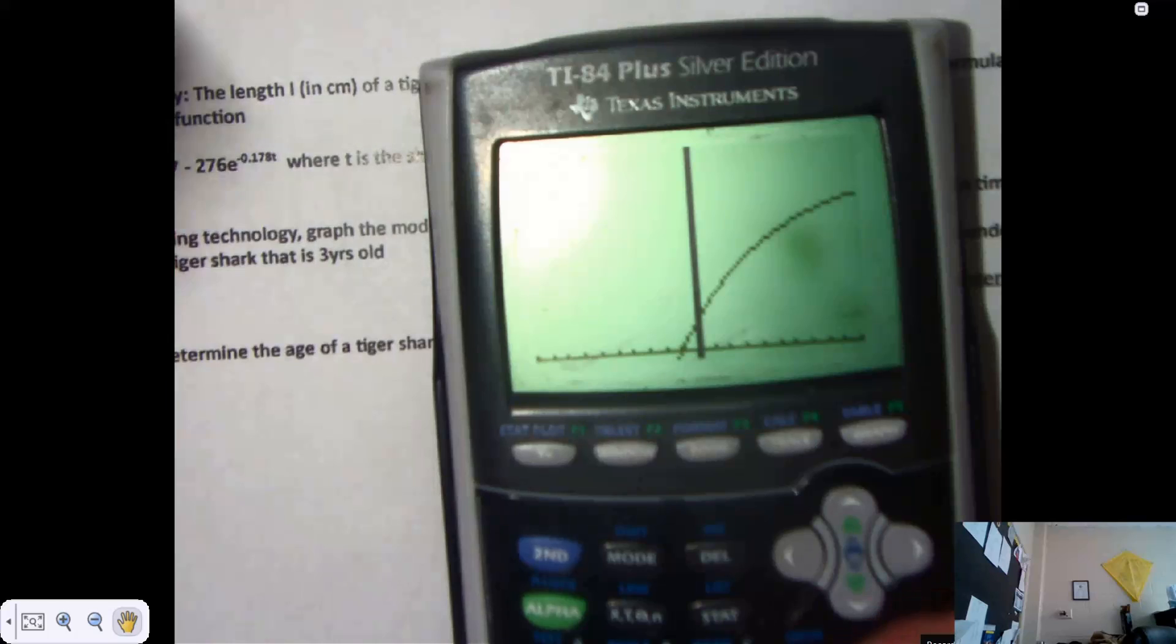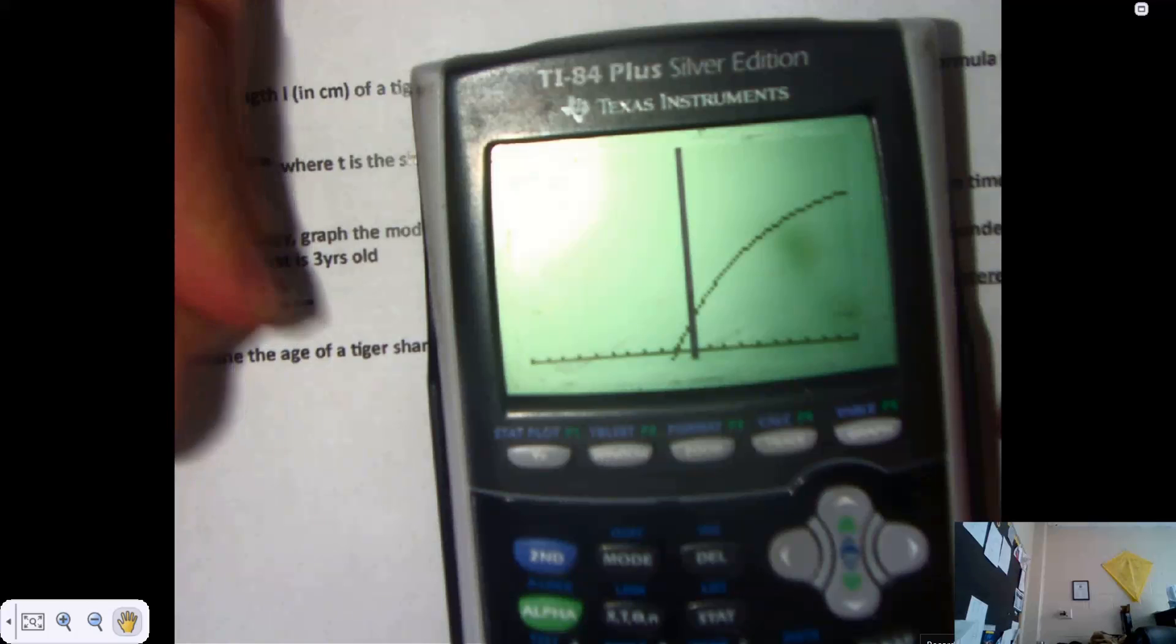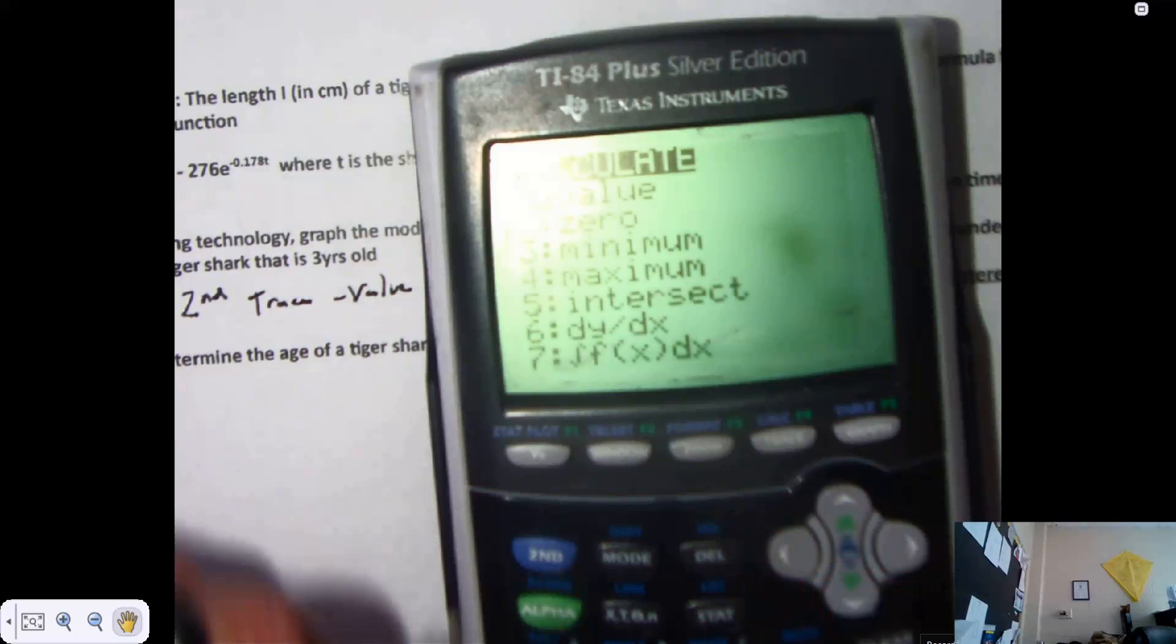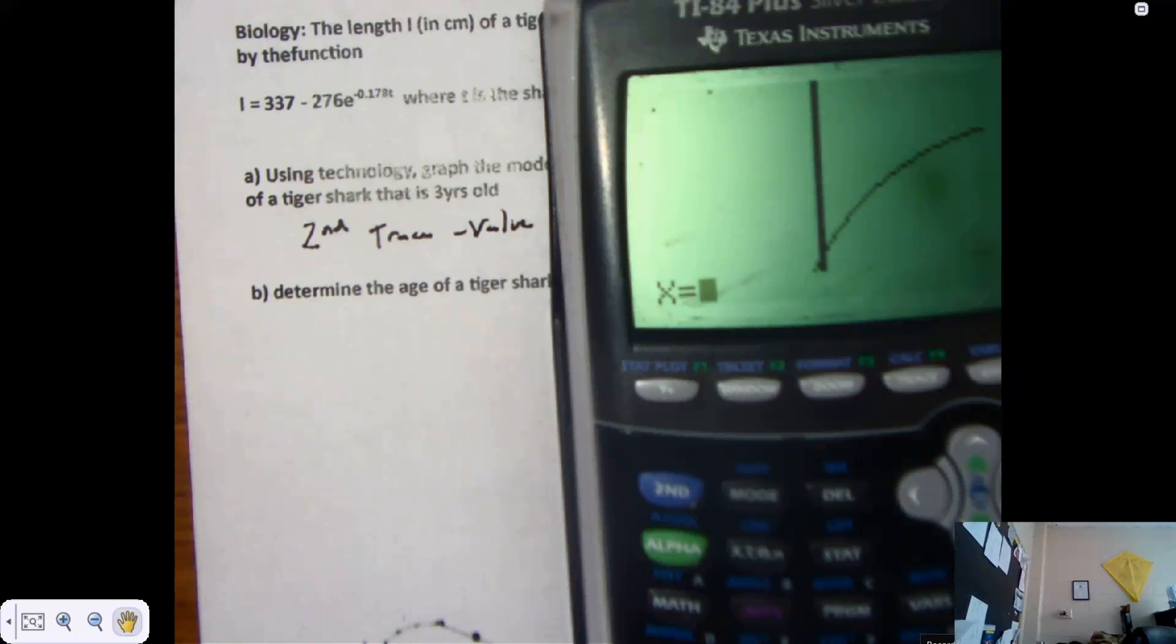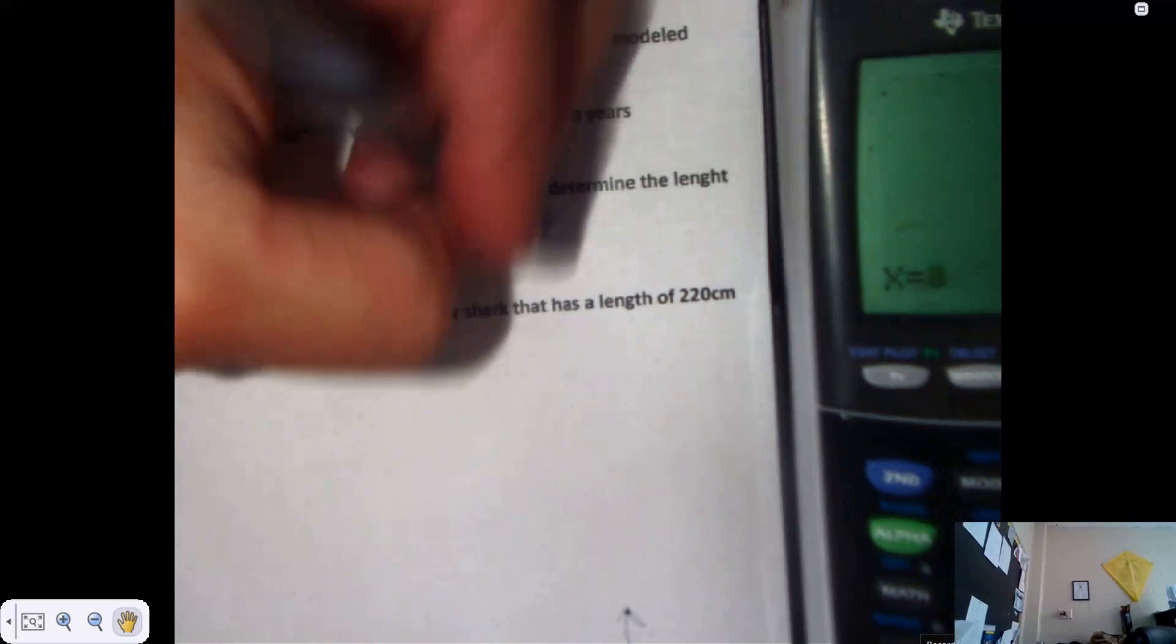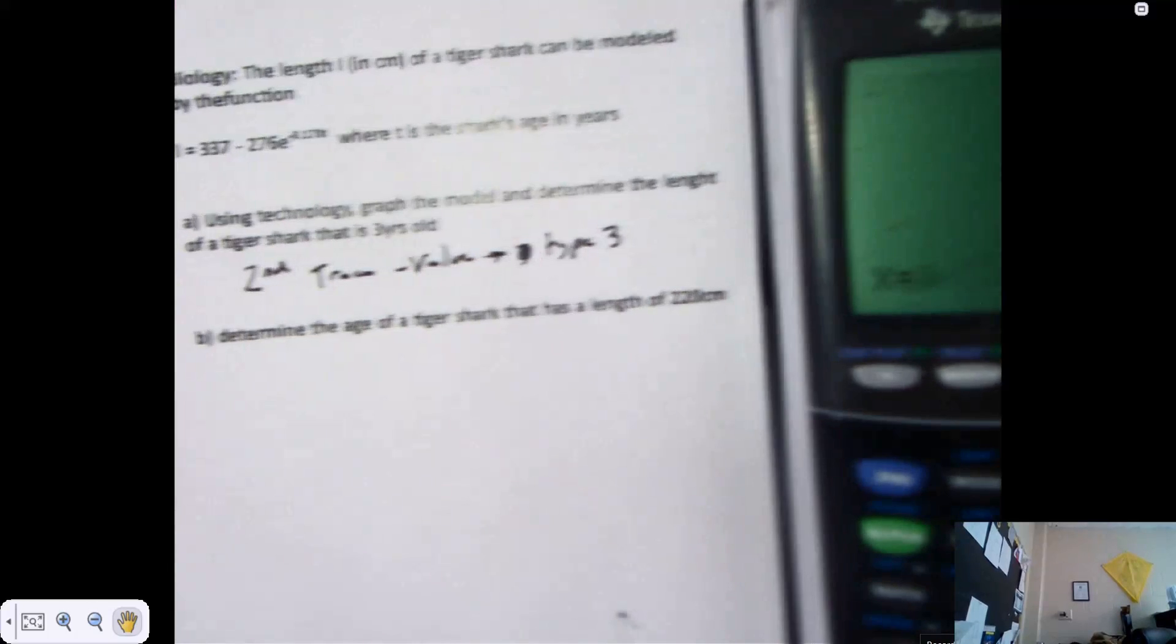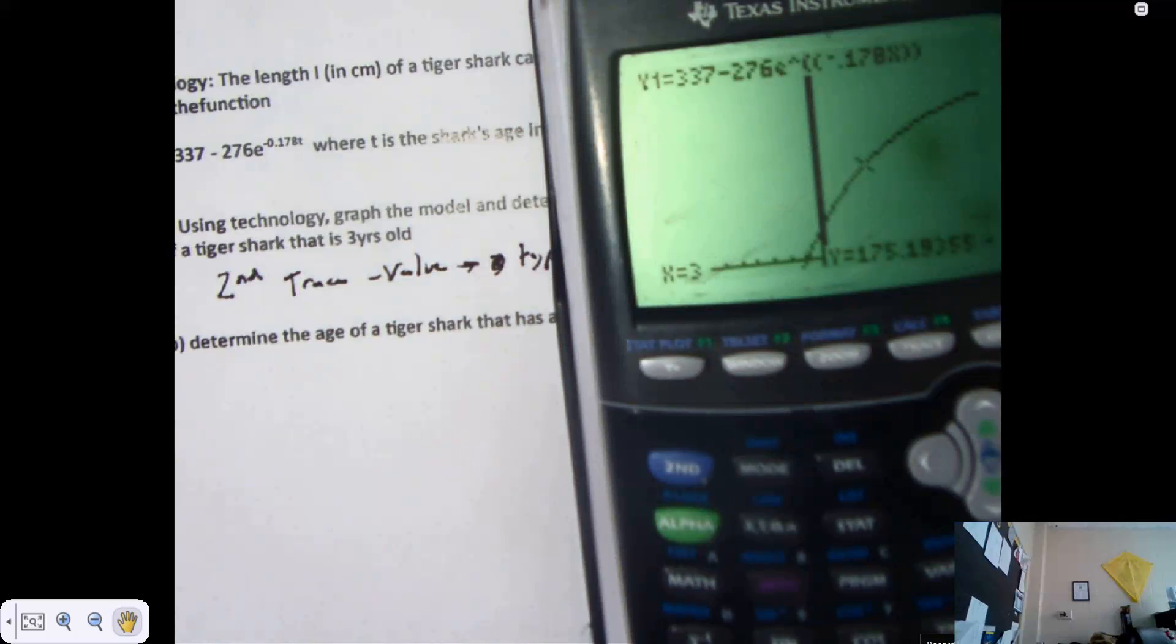Now, the reason I asked you this with technology is because there's a function in your calculator. It's under second trace. Value. Second trace value. It's the first one you see. It says, give me an X value. Second trace value. What am I asking you to do? How old is the shark going to be? You want to know how long the shark is when it's three years old? You say X is three. That shark's about 175.2 centimeters.